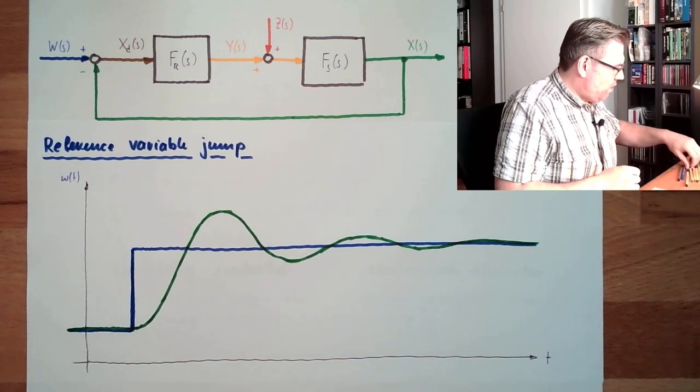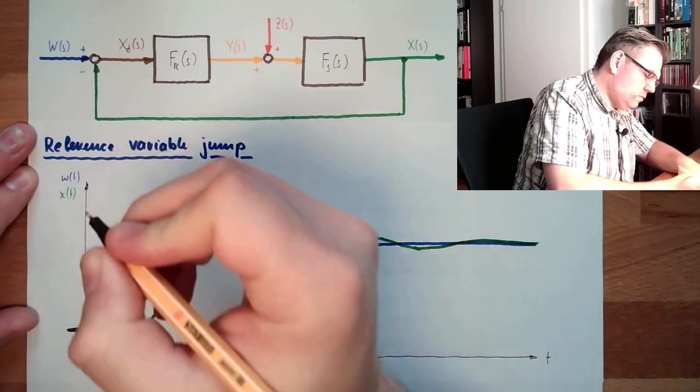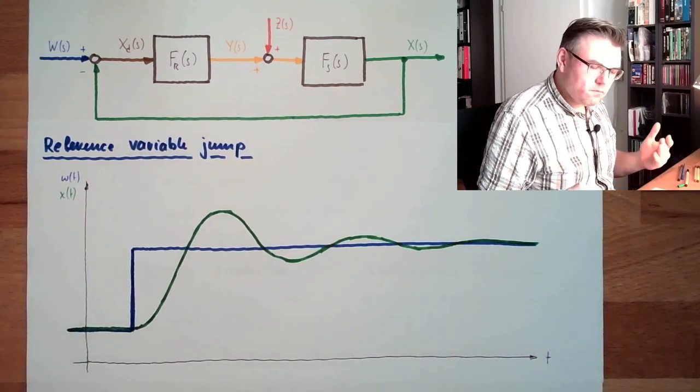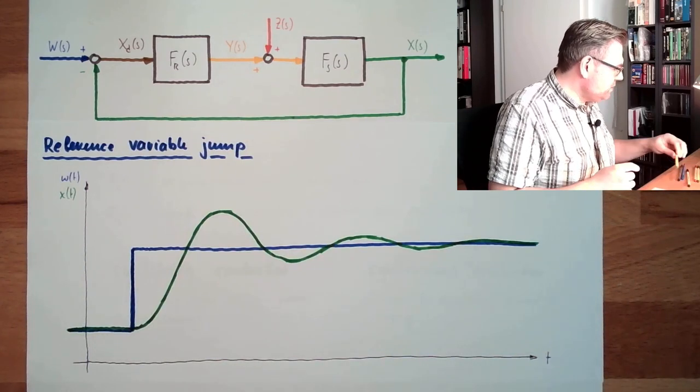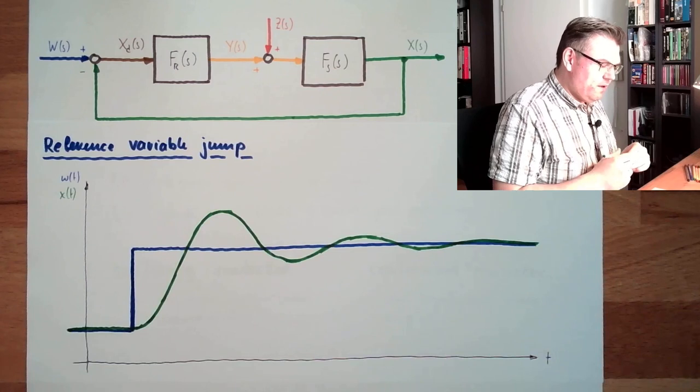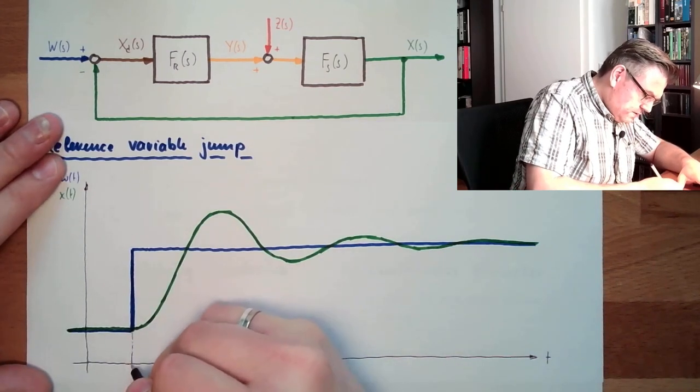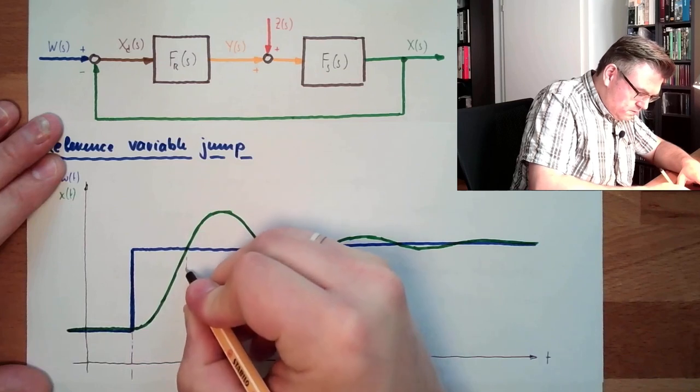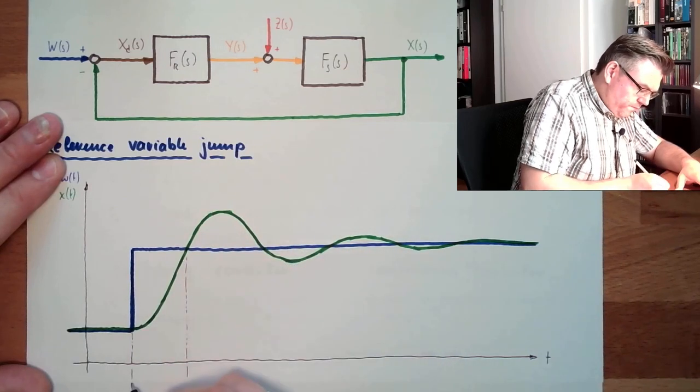So this is our X from T, controlled variable. What can I read out of this? Well, there are certain values which we can have a look at. One value is this, this time here.